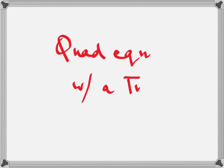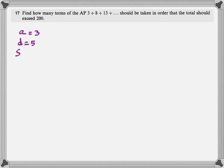Quadratic equation with a twist. Let's see. What is that twist? Find how many terms of the AP should be taken in order so that the total should exceed 200. Now, it's not exactly 200. It is exceeding 200. First term is 3. Common difference is 5. Sn is greater than 200. Write everything where it belongs. Make it greater than 200.